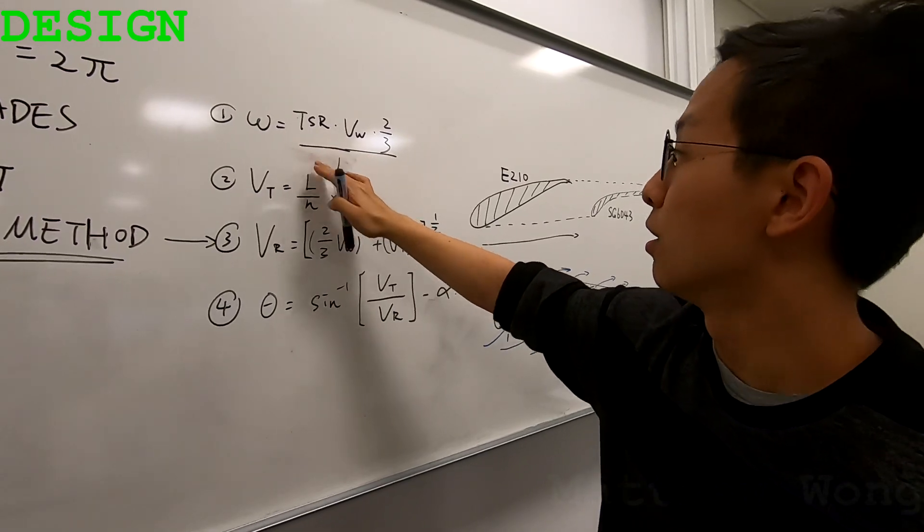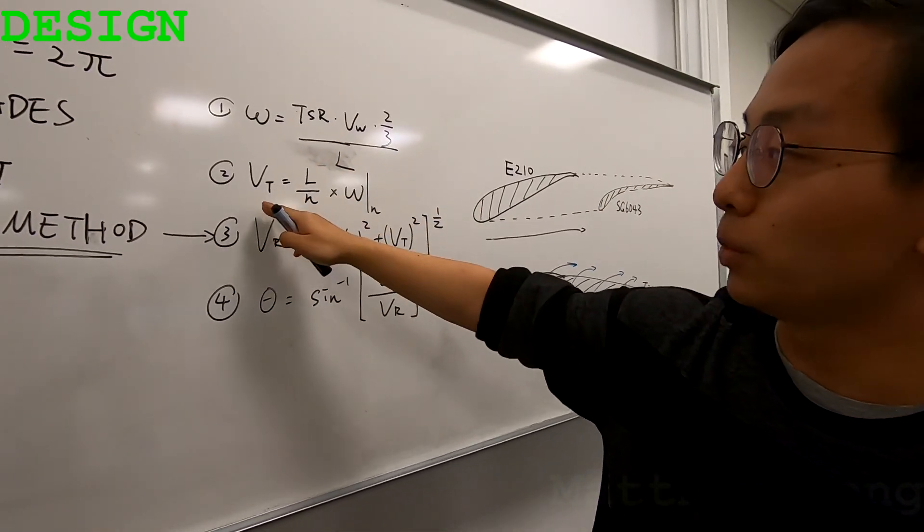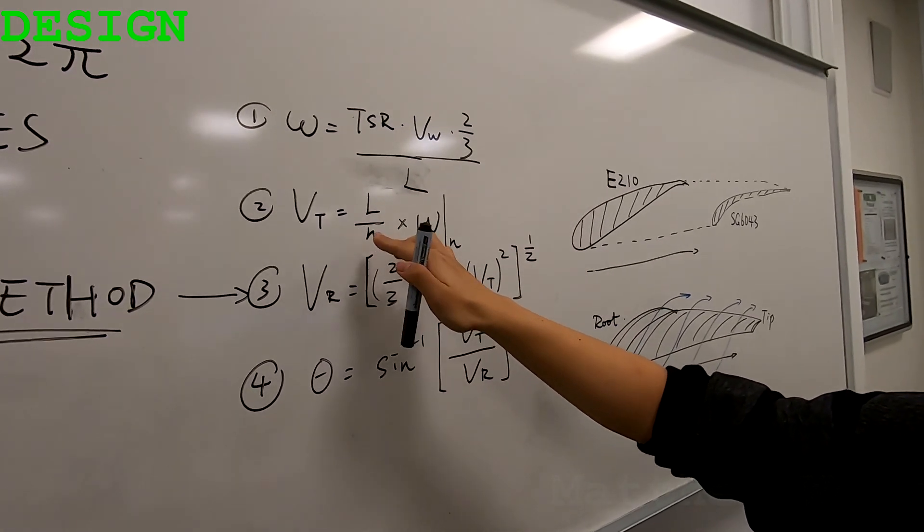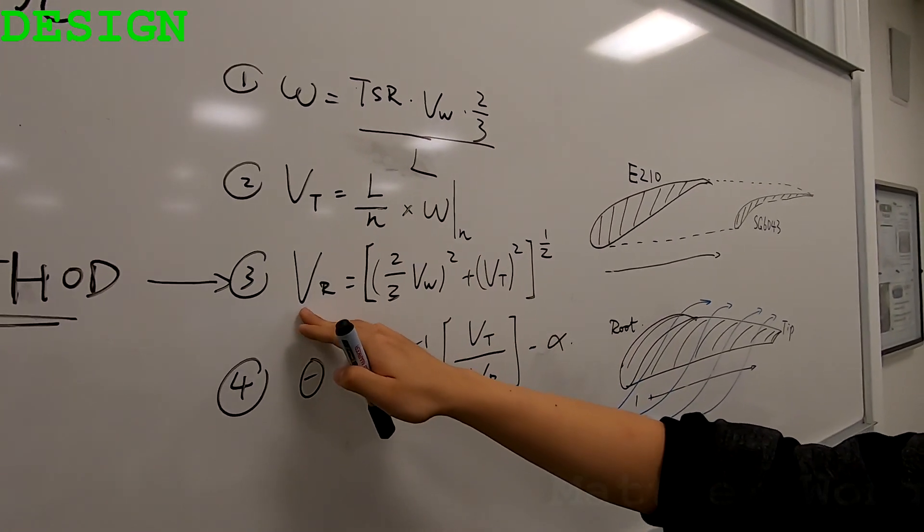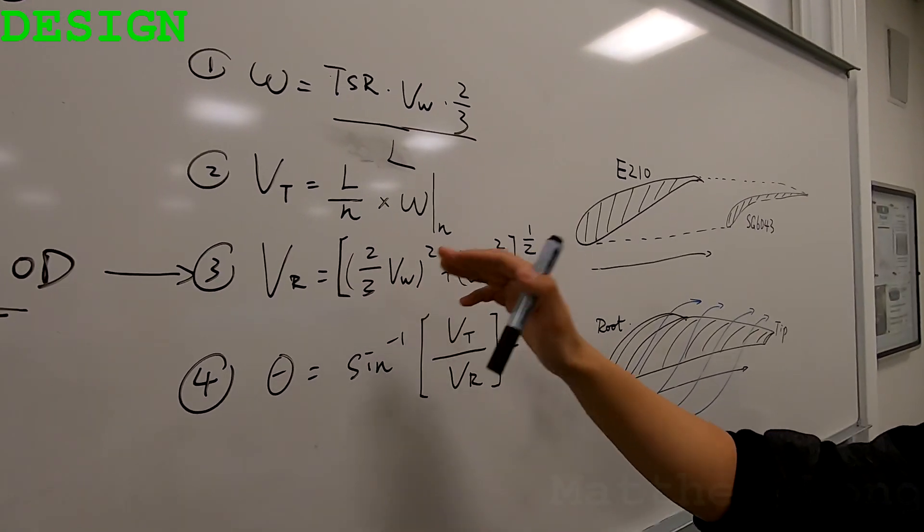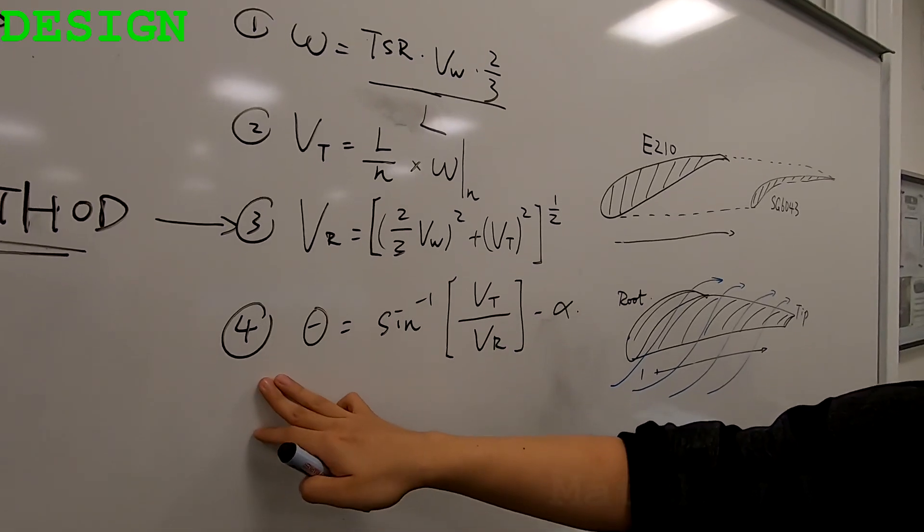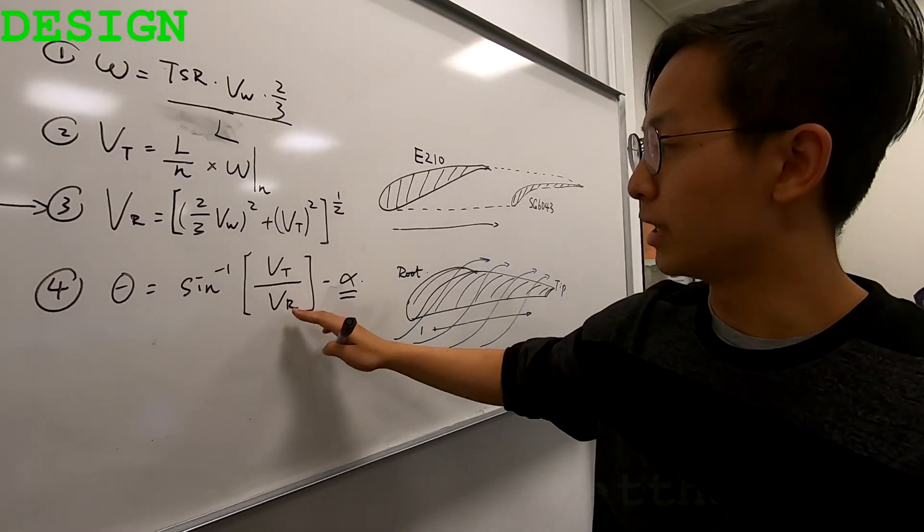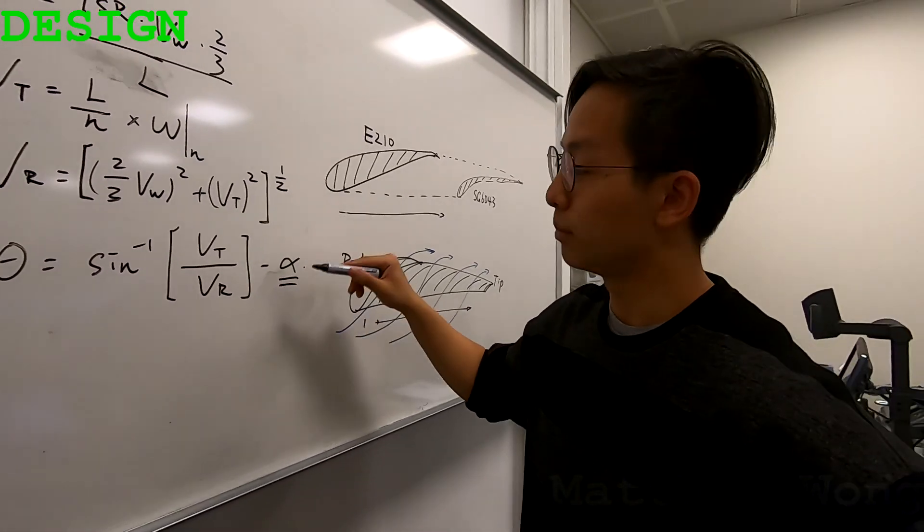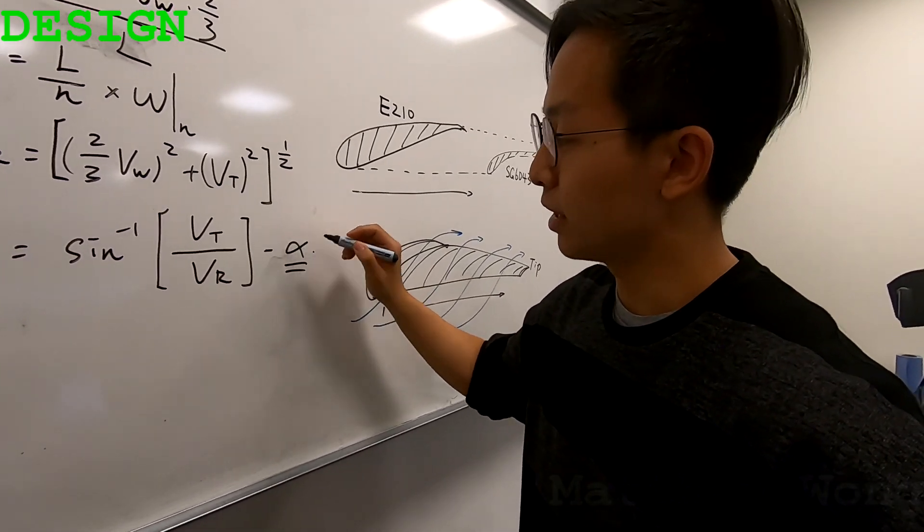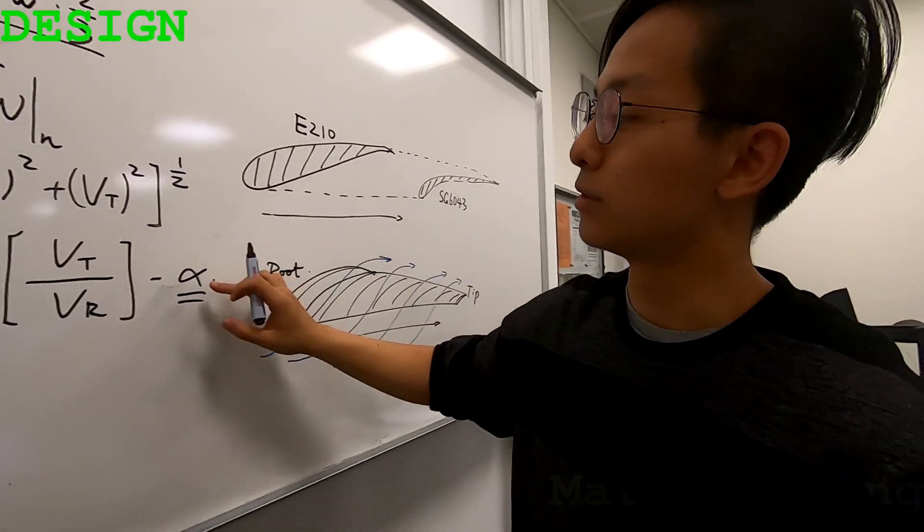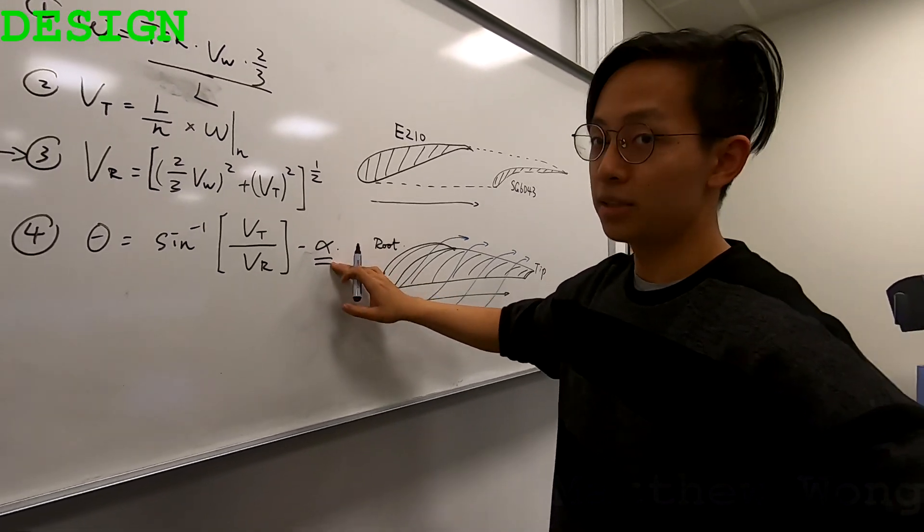The first step we calculate the angular velocity of the overall blade. The second step we calculate the tangential velocity at each point along the blade. So the end here represents the position along the blade. And the third step we calculate the relative velocity seen by the blade at that point which is a simple trigonometry. And the last step we use the twist calculated from the tangential velocity over the relative velocity minus the optimum angle of attack of the blade. And this alpha is the optimum angle of attack we chose for these two specific blades which means at this angle of attack it is going to have the optimum CL.